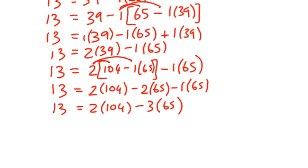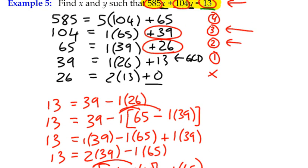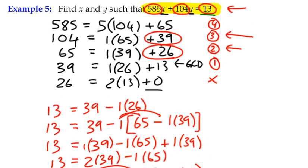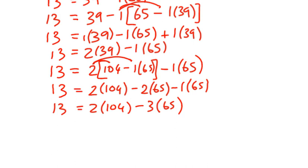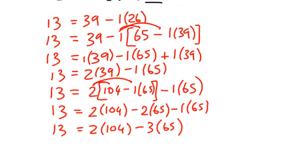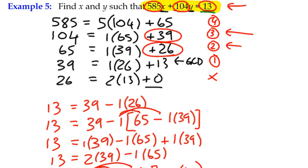I'm nearly there, because remember that my original equation contains 104 and 13, which mine does here, but it doesn't have a 65 in it. So, I need to go to the very top equation, number 4, and that's where I get to substitute my 65. 65 is 585 minus 5 lots of 104.